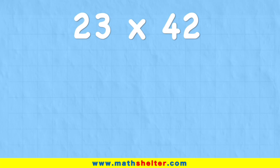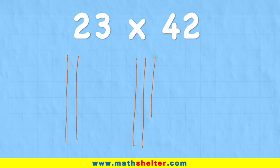What we can do is represent 23 like this: 1, 2, and then 3, 1, 2, 3.